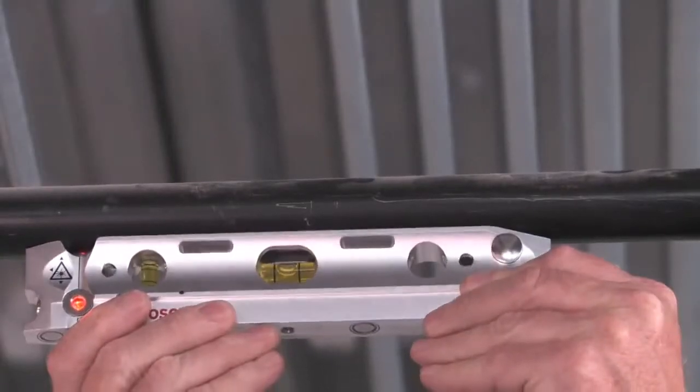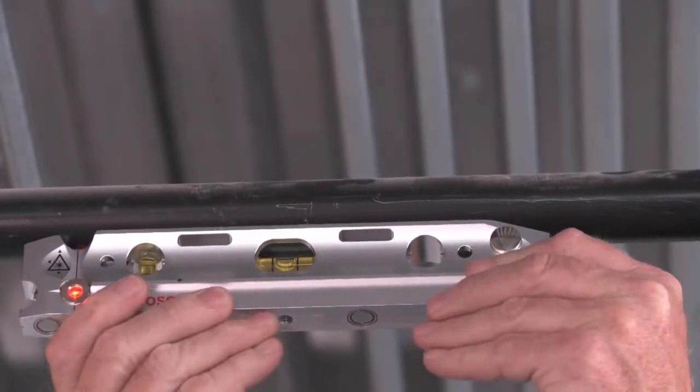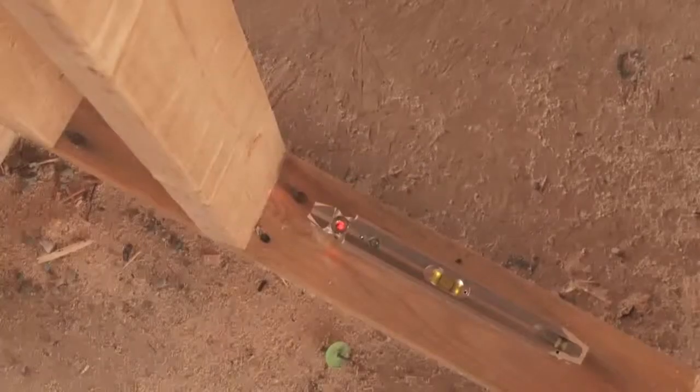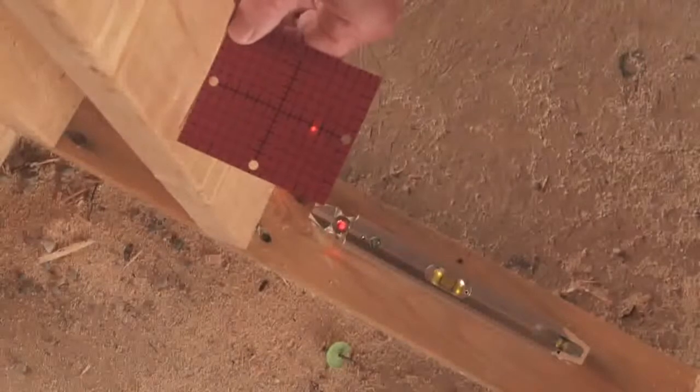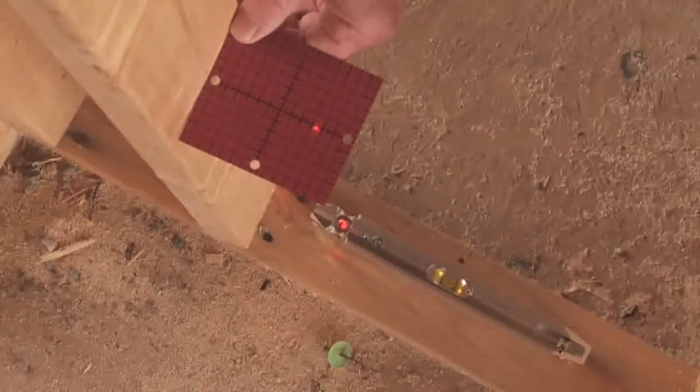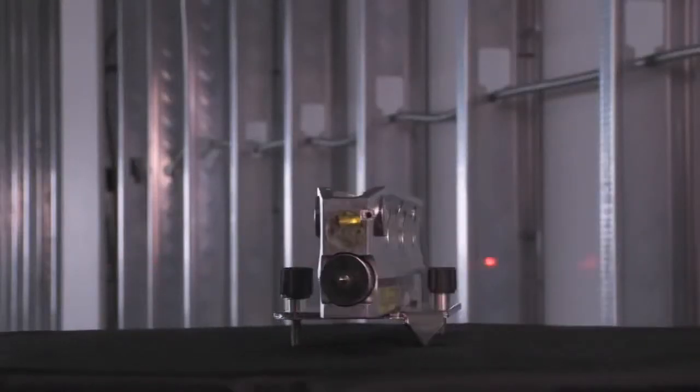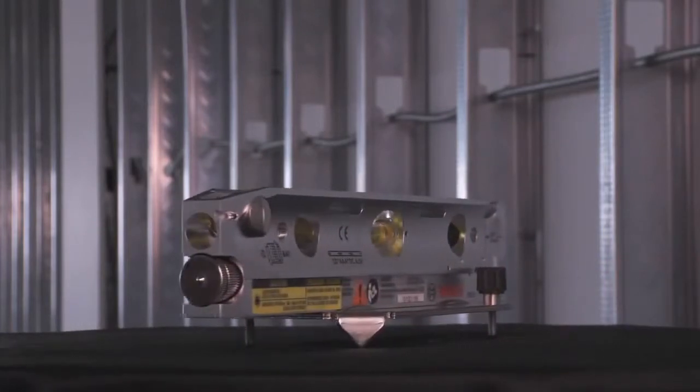The GPL3T adds to the convenience of an accurate spirit level, with the addition of three highly visible laser beams that project up, forward and left of the unit, all positioned at 90 degrees to each other.